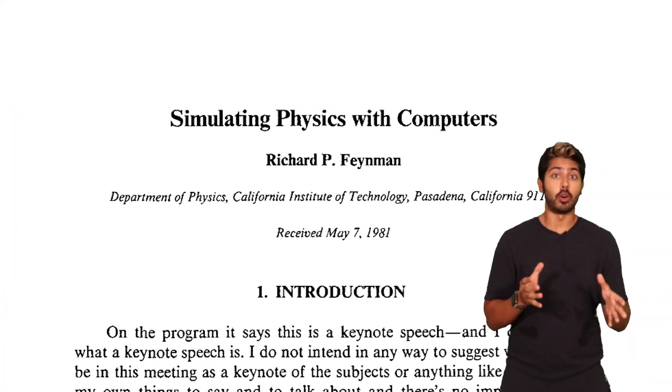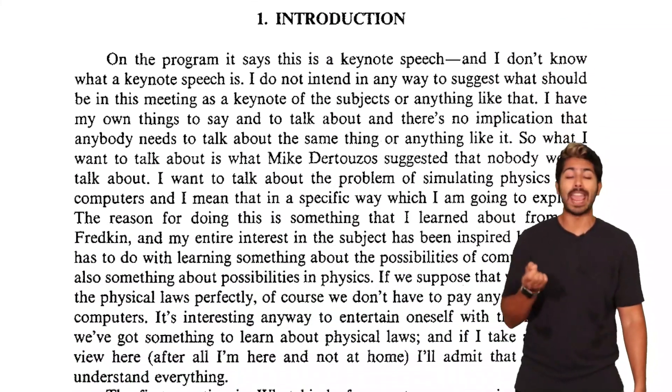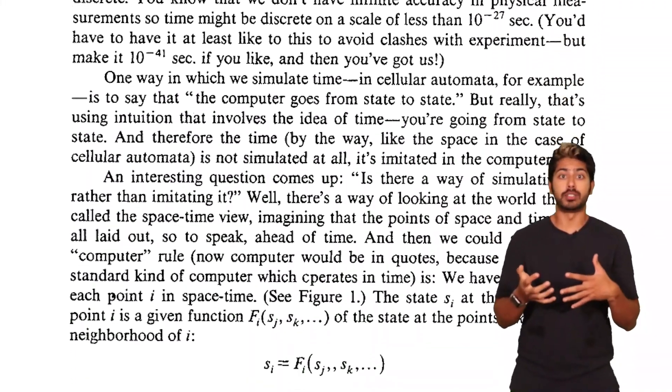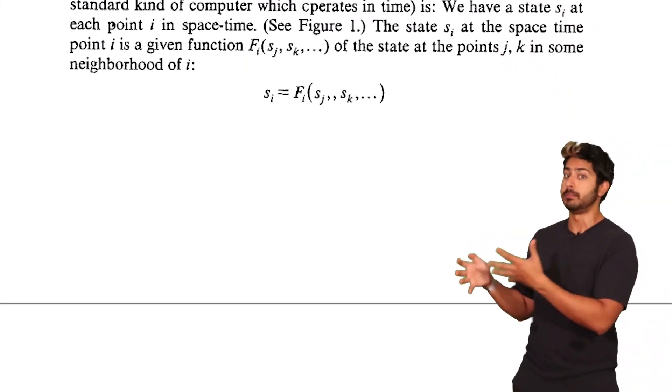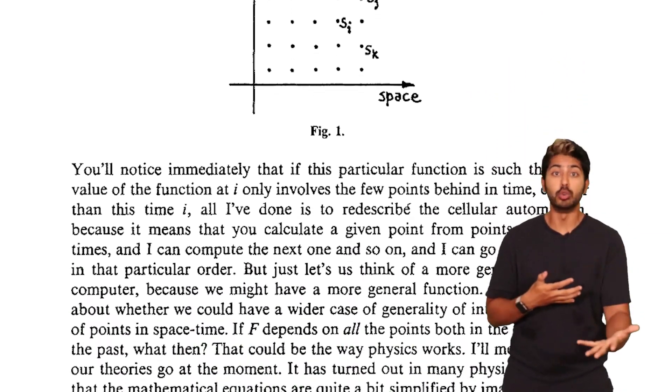About 40 years ago, the popular physicist Richard Feynman proposed that in order to be able to simulate physics on a machine properly, that includes the laws of both classical and quantum mechanics, we'd need to create a kind of quantum computer.